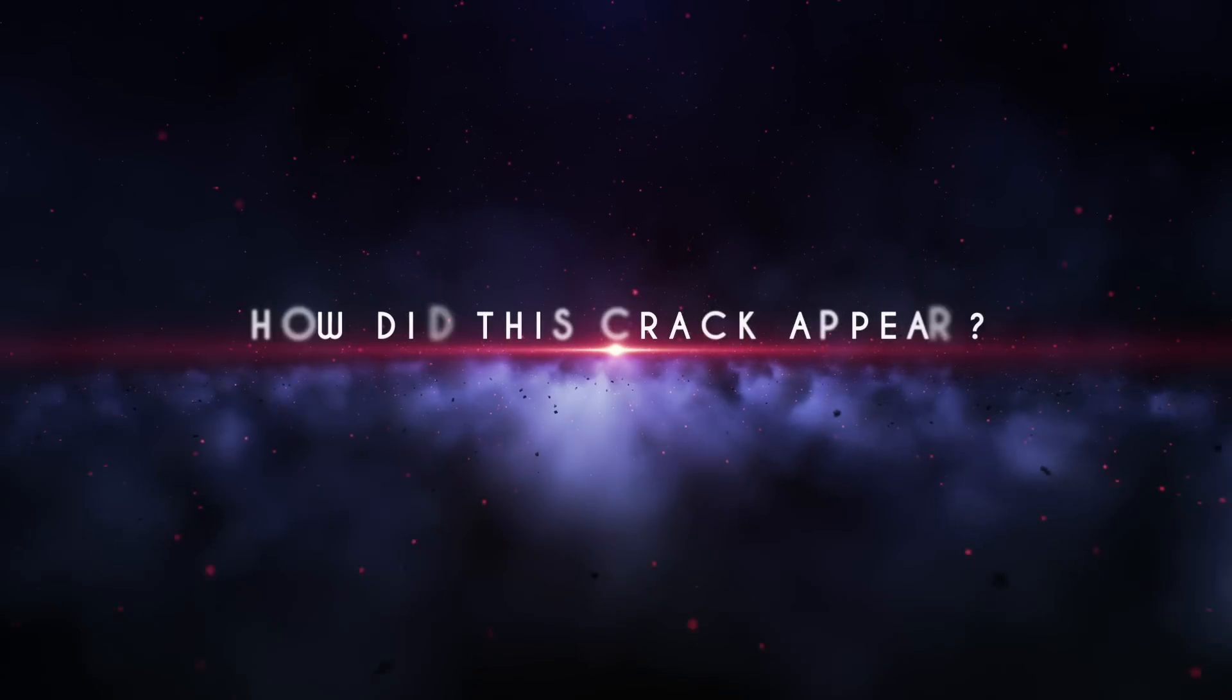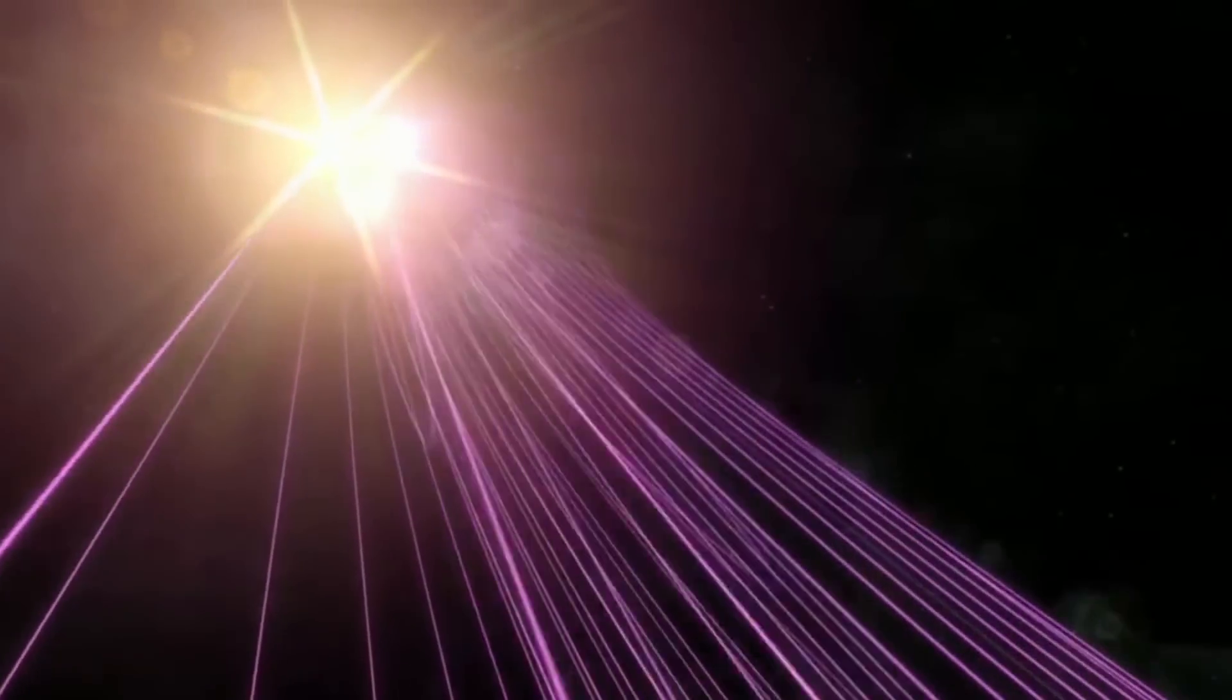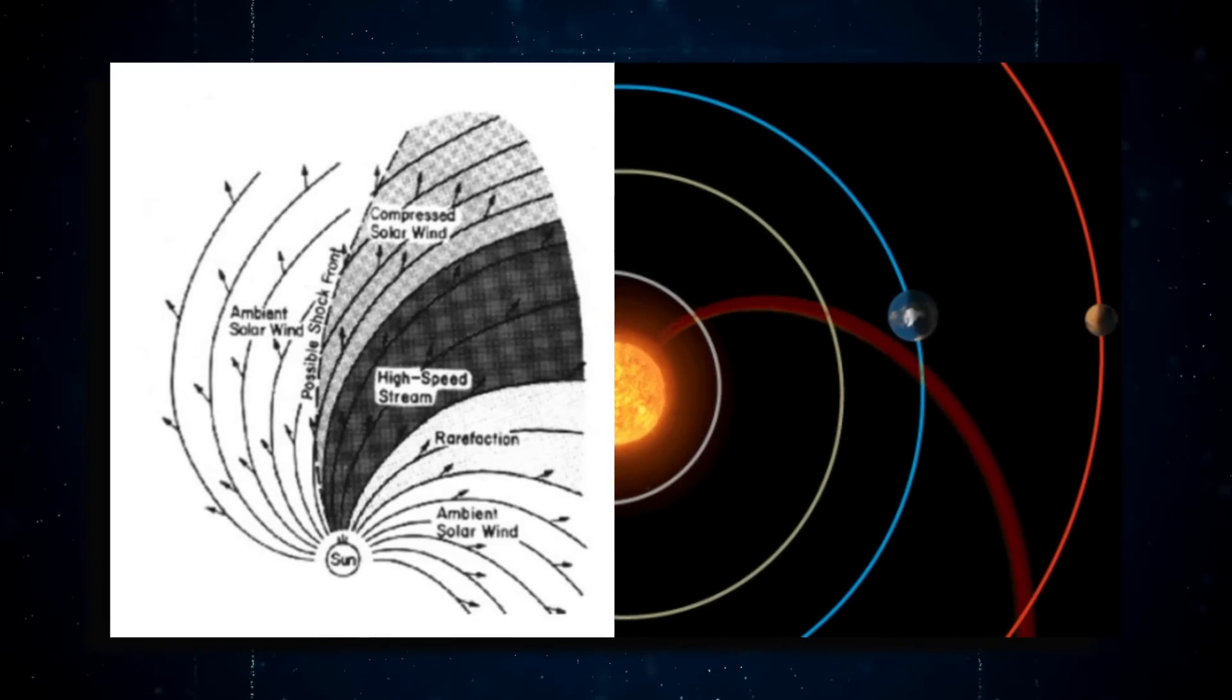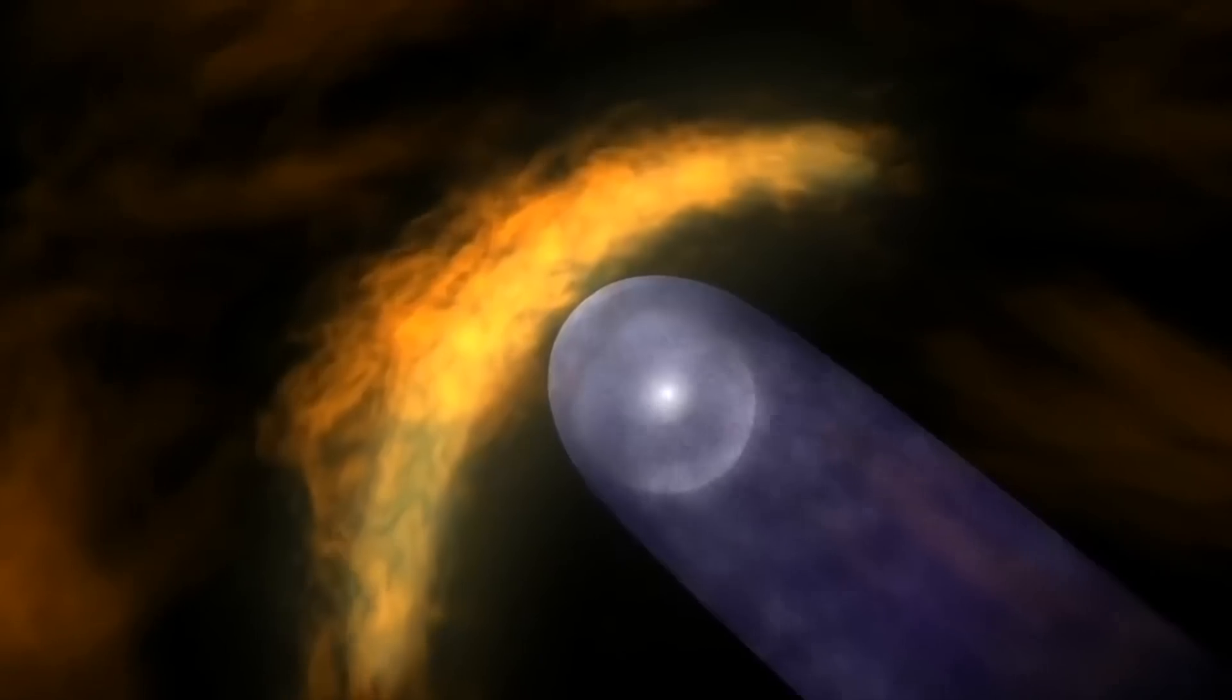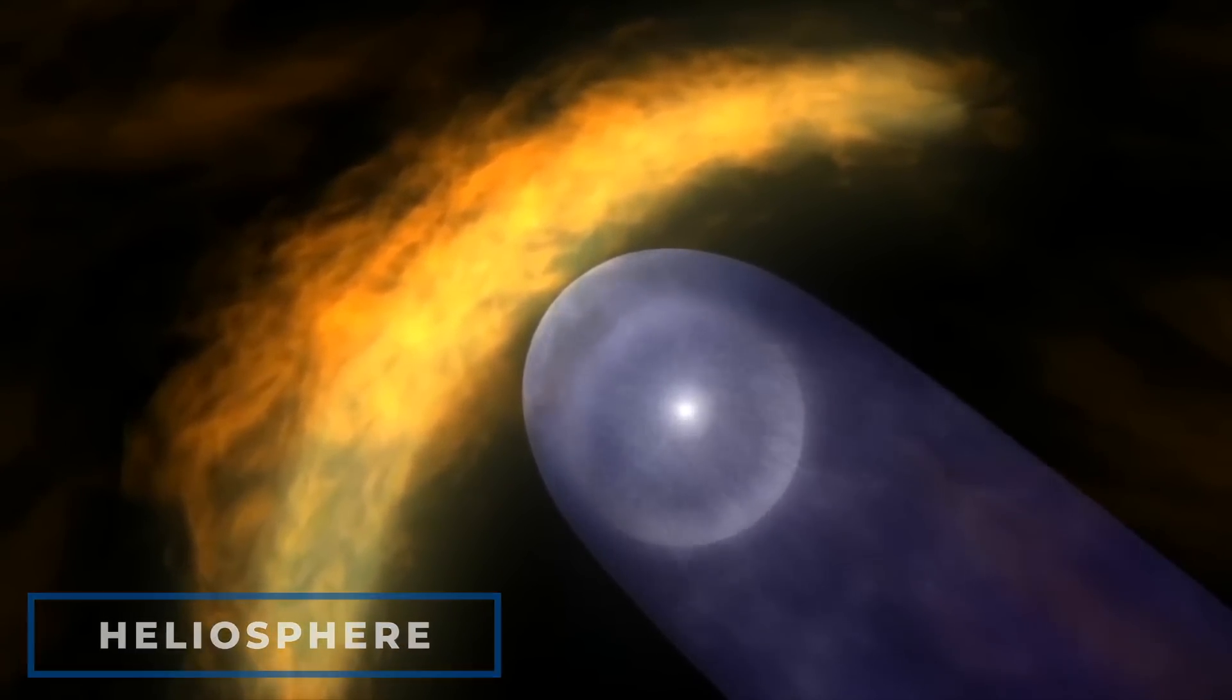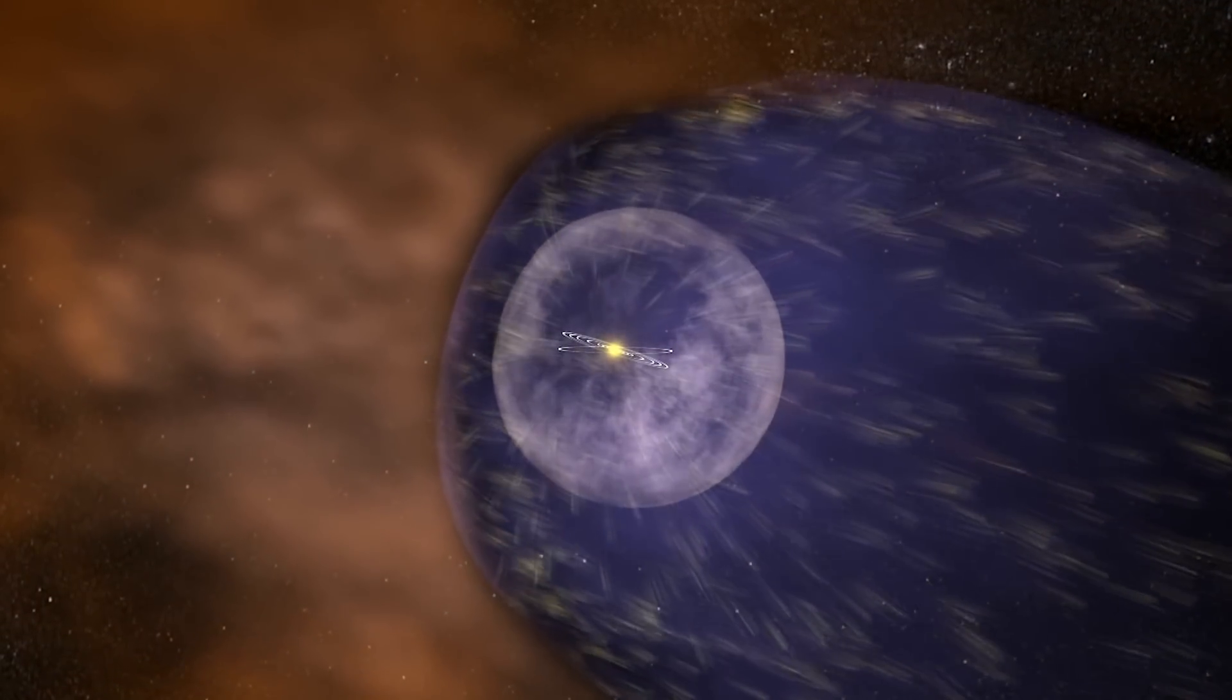But how did this crack appear? As it turns out, this breach in the magnetic field was caused by a rare phenomenon known as a co-rotating interaction region from the Sun, or CIR. These CIRs are actually large-scale plasma structures that form in the heliosphere's low and intermediate latitudes when fast-moving and slow-moving streams of solar wind collide.